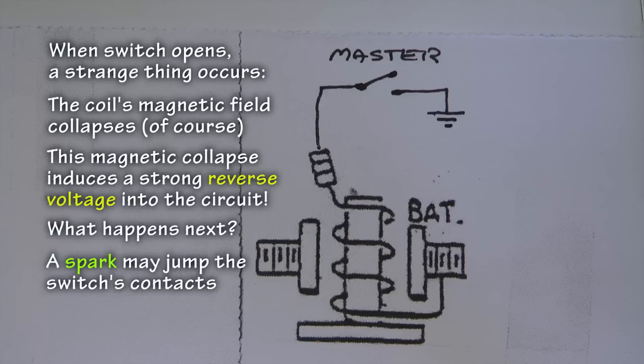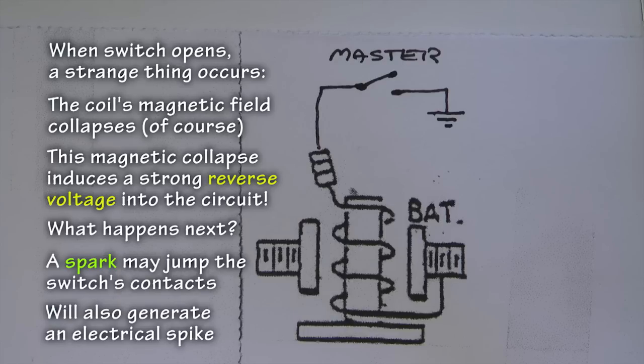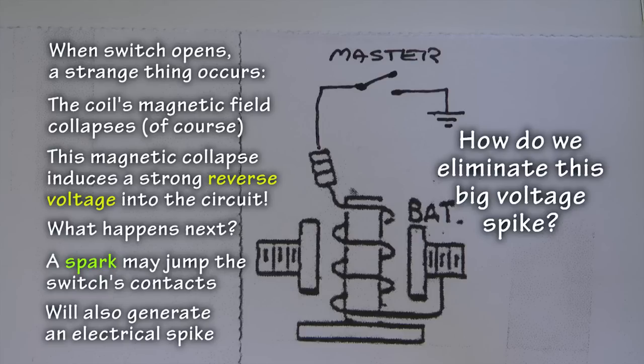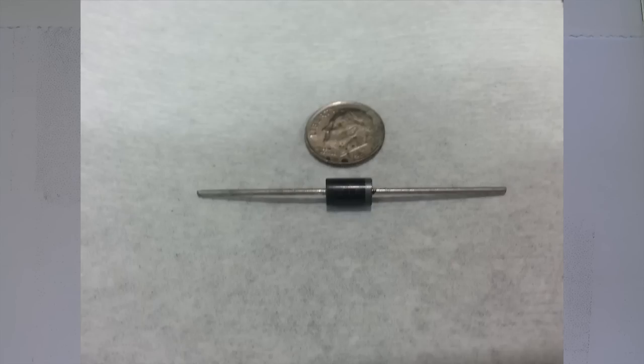Also, this spark will radiate a signal that can possibly provide havoc with sensitive electronic equipment. It is good practice to eliminate this spark altogether, and we have a simple way to do this. First, connect a diode across the coil.